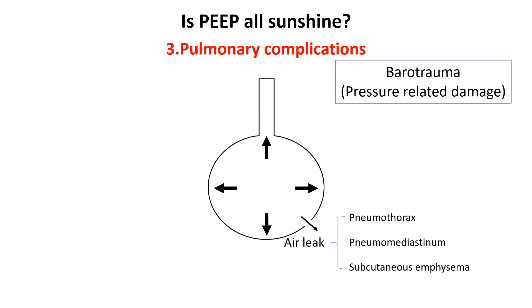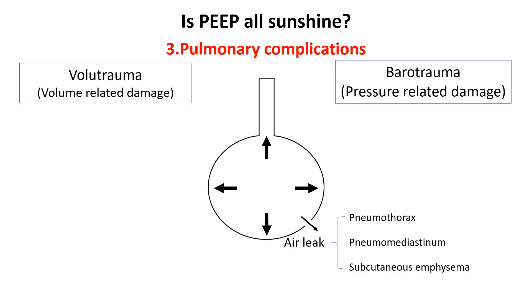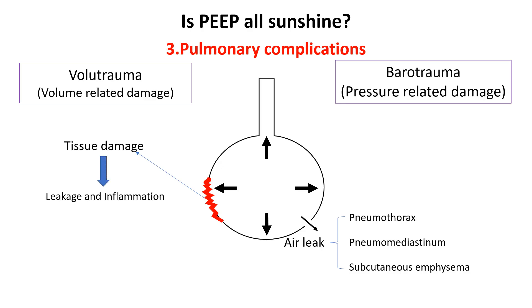It can also lead to volutrauma, which occurs when alveoli are overstretched due to high PEEP, causing damage to the lung tissue. This overstretching triggers inflammation, increases capillary permeability, and allows fluid to leak into the lungs, potentially resulting in pulmonary edema.